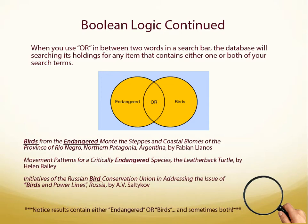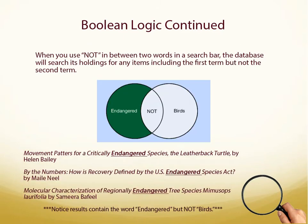OR is our next Boolean operator. Use OR in between two terms when you want to find results that include either one or both of your search terms. NOT is the last Boolean operator. Use NOT in between two terms to include results containing the first term but excluding the second.